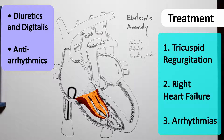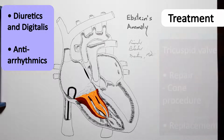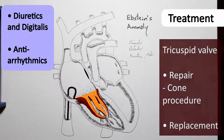Additional procedures may be indicated to close the atrial septal defect, as well as correct associated defects such as pulmonary stenosis. Naturally, tricuspid valve repair is one of the main staples of the surgical treatment.